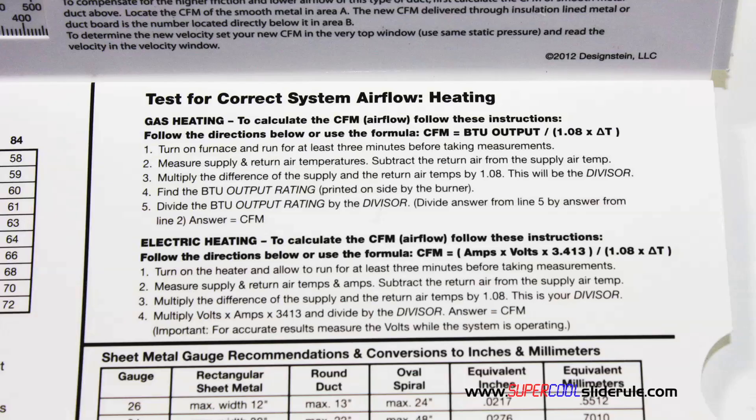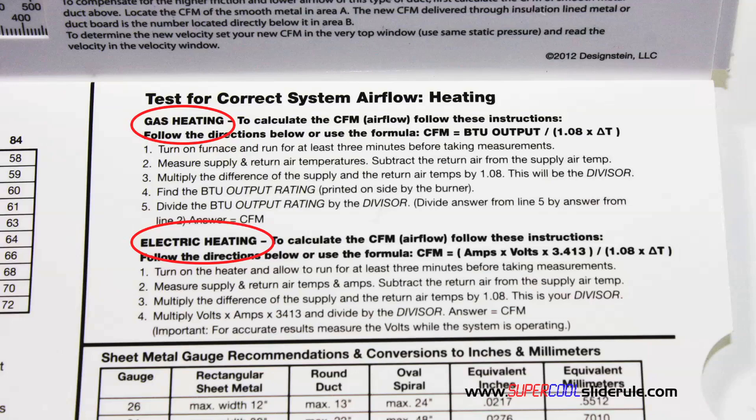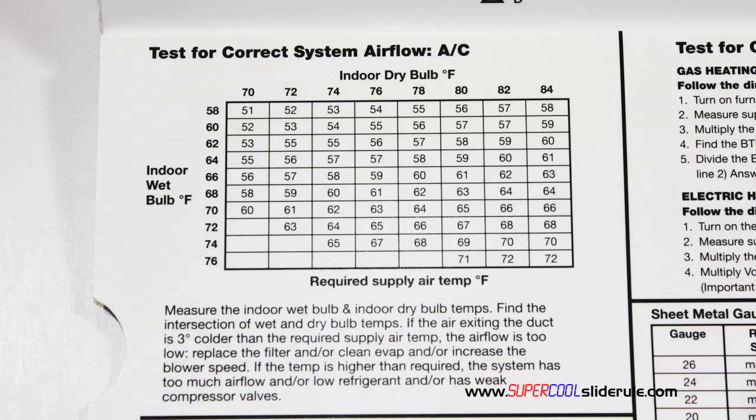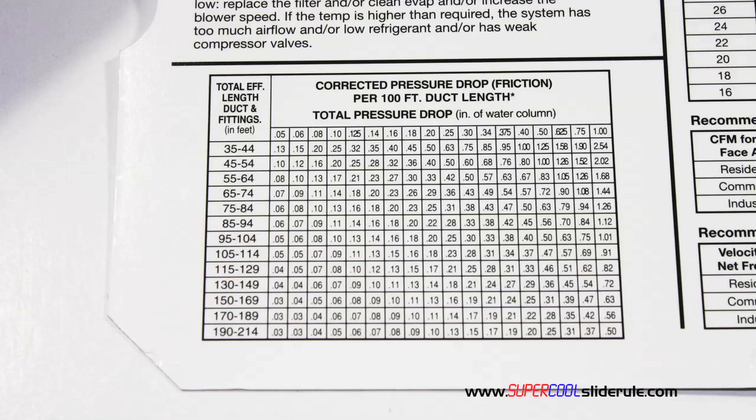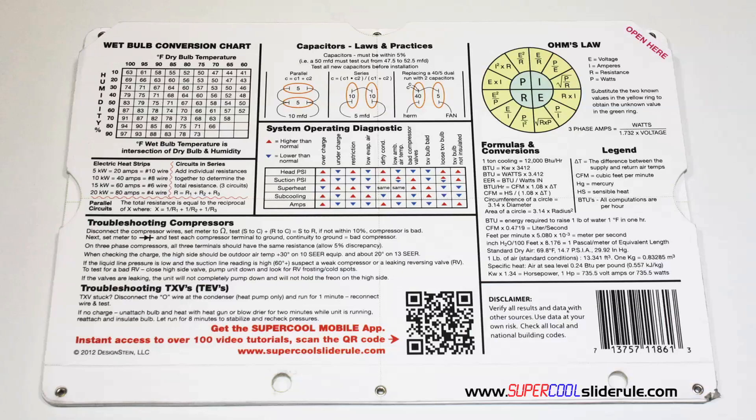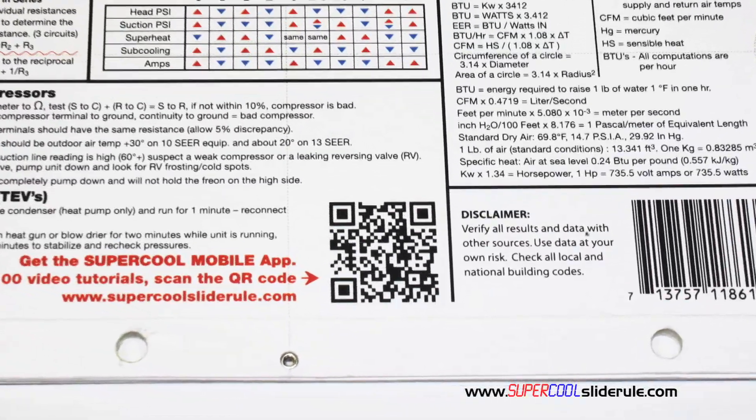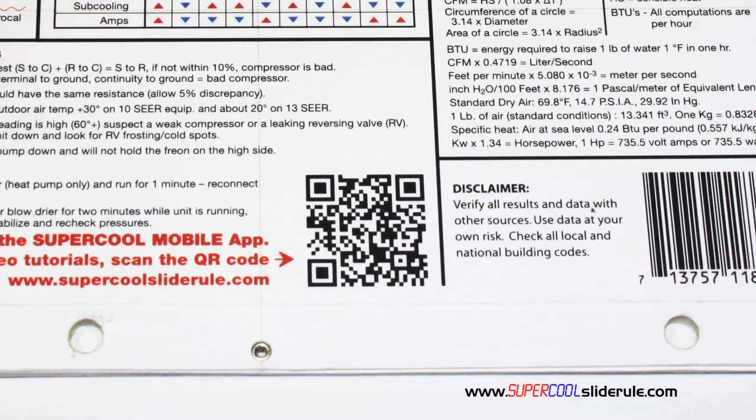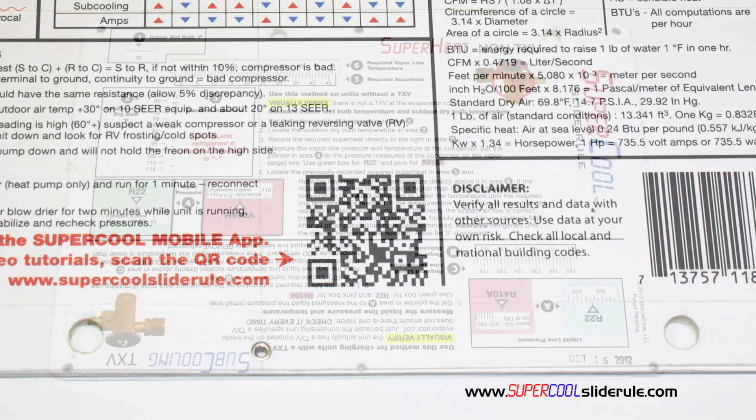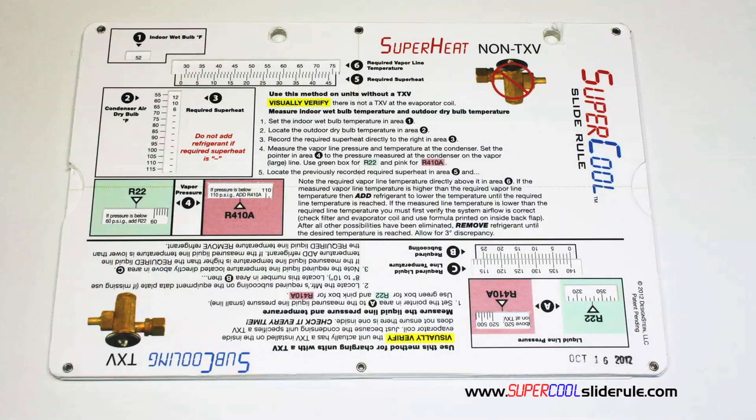It has step-by-step directions for determining airflow through a gas furnace, electric furnace, or an air conditioning unit. It has pressure drop multipliers for ductwork as well as recommended velocities. And finally the scanning of this QR code gives instant access to over 100 tutorials to assist the technician with every test and repair imaginable. You owe it to yourself as well as your customers to own this tool.